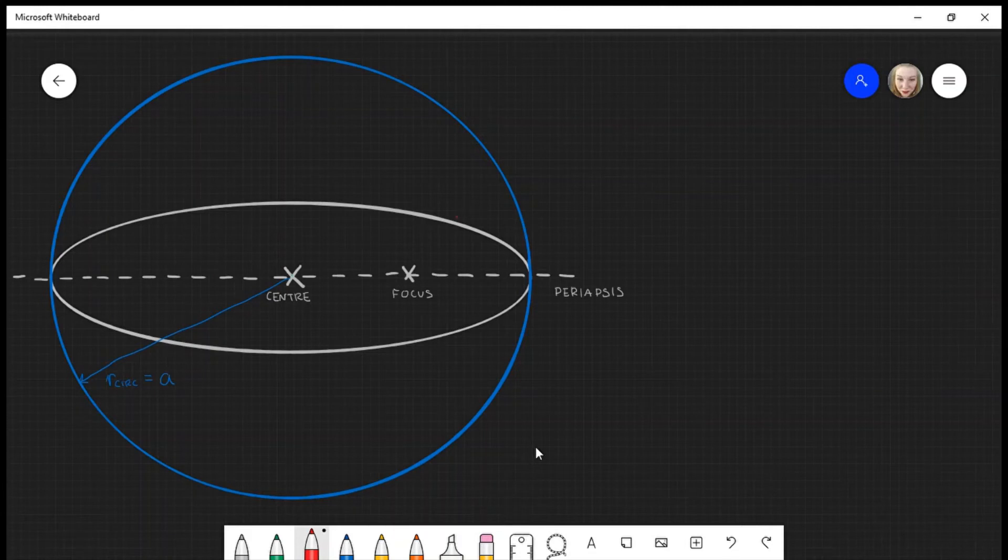I'm going to label a point on the ellipse P. Point P here will be the point on the transfer ellipse where the burn occurs to put it onto the final orbit. I'm going to draw an angle between point P, focus, and the periapsis.